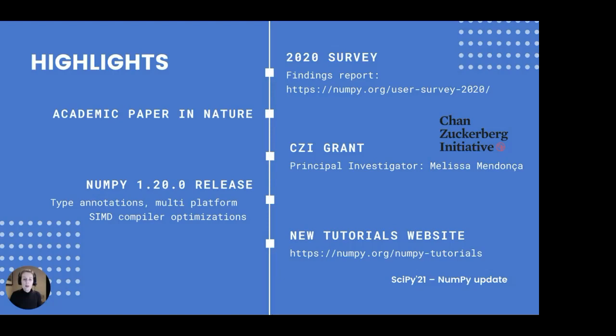Melissa Mendonça is the principal investigator of this grant. For NumPy, the grant is funding work on improving documentation, modernizing NumPy's integration with Fortran tools via F2Py, and community building. In January 2021, we released NumPy 1.20. Some 684 pull requests contributed by 184 people, mostly volunteers, were merged — this was the largest NumPy release to date. The two most exciting new features are type annotations for large parts of NumPy, and the new NumPy typing submodule containing array-like and dtype-like aliases.